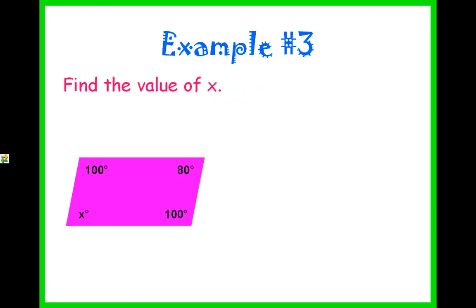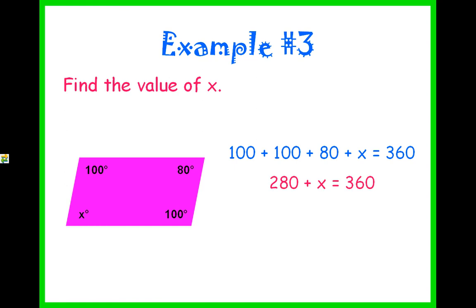Example number three: find the value of x. We know that if we add everything together, 100 plus 100 plus 80 plus x equals 360. Adding like terms, 280 plus x equals 360. Subtracting 280 from both sides, x equals 80. Notice that in a parallelogram, opposite angles are congruent — so if one angle is 100, the opposite is 100, and if one is 80, the opposite is 80 as well.